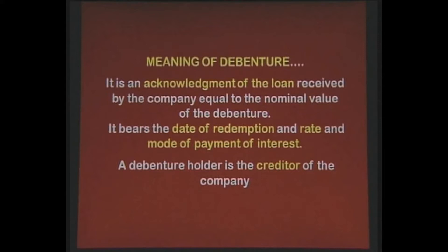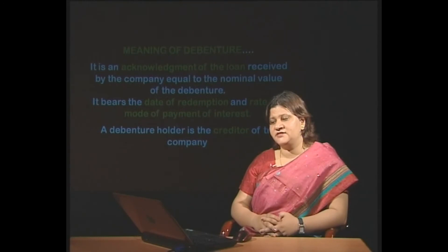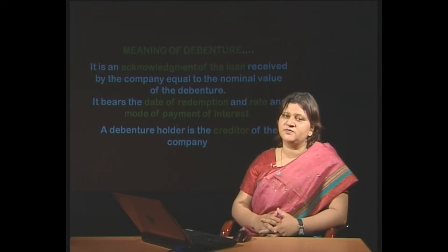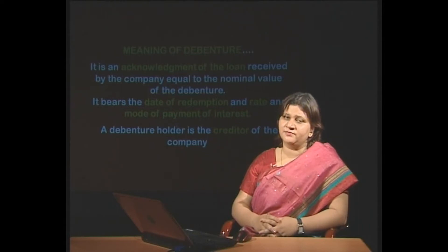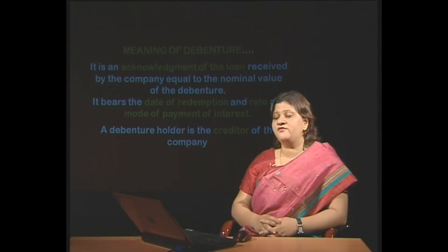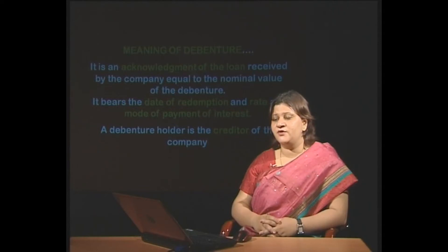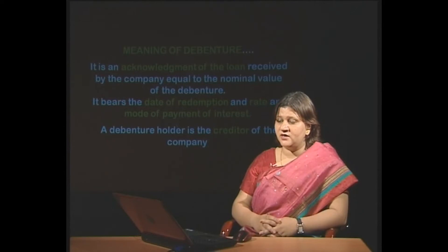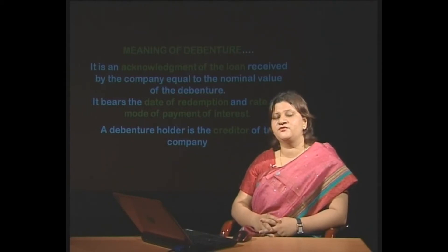It bears the date of redemption and rate and mode of interest. The debenture holder is the creditor of the company. It is the acknowledgement of loan with a nominal value — the smallest unit at which it is being issued to the public. It bears a date of redemption; they are not irredeemable or forever a loan to the company. They are going to be redeemed after the expiry of the redemption period mentioned on the debenture certificate. Rate of debenture interest is also mentioned, along with the mode of payment — whether quarterly, half-yearly, or annually. The debenture holder is the creditor of the company because he is asking the money back from the company which it has given for the purpose of finance.